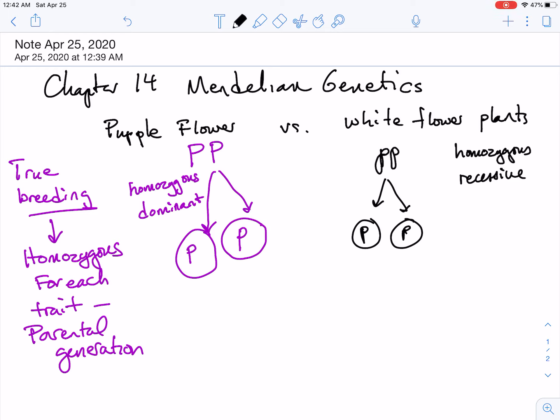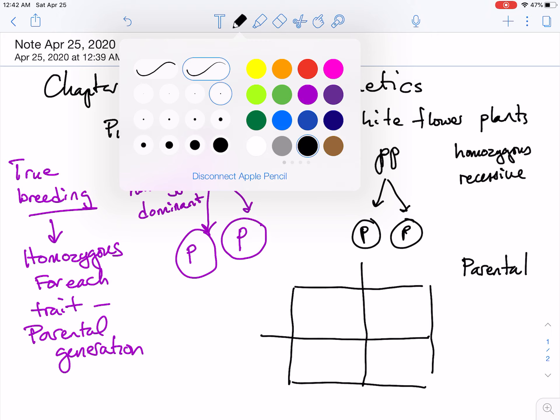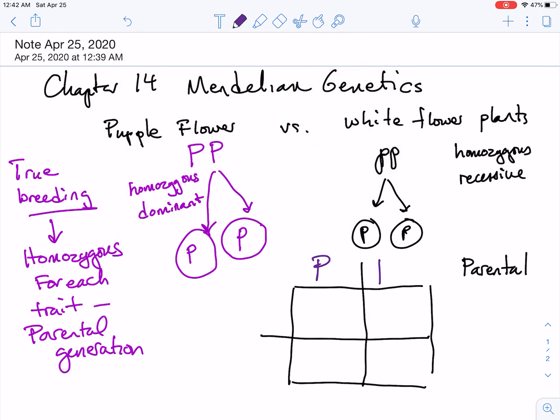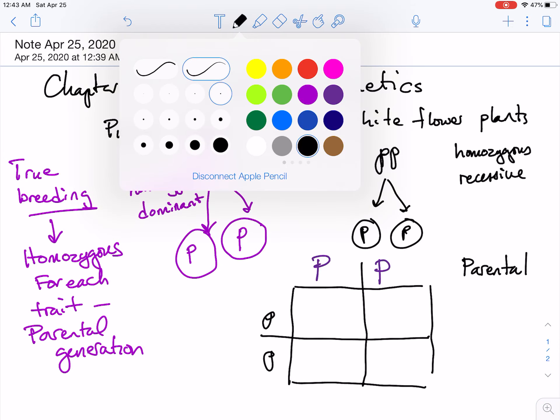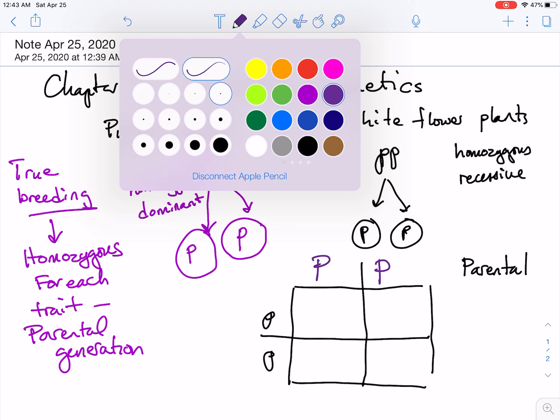All right, so let's cross them in a Punnett square. I'm going to do my Punnett square like this. Again, this is my parental generation. So we've got big P, big P up here, little p, little p down here, and we cross them.